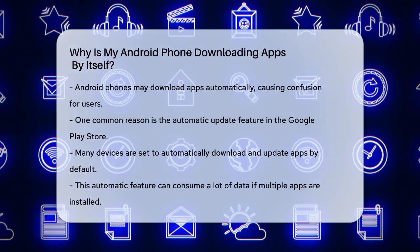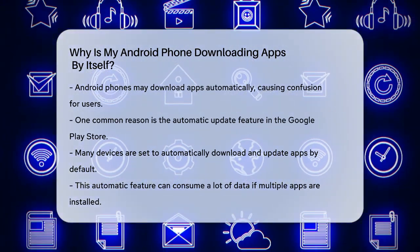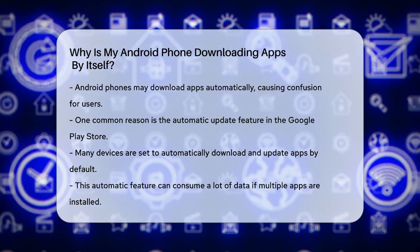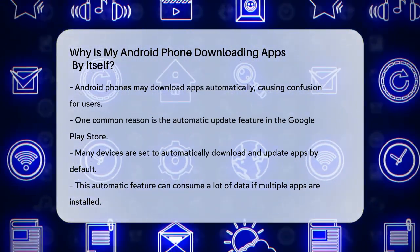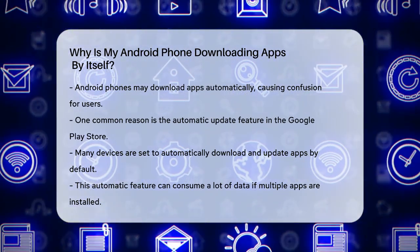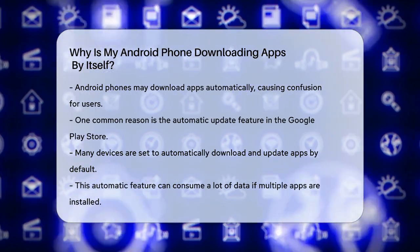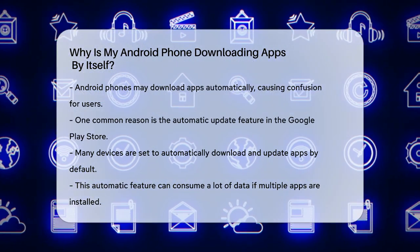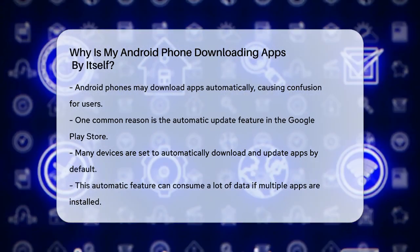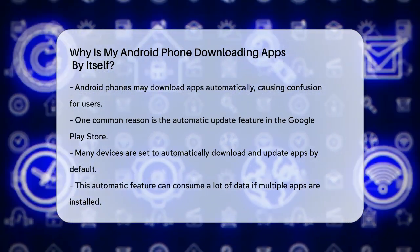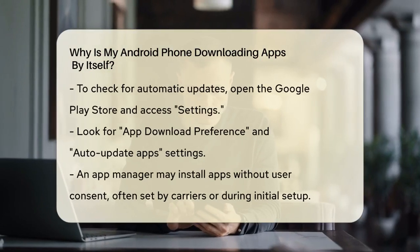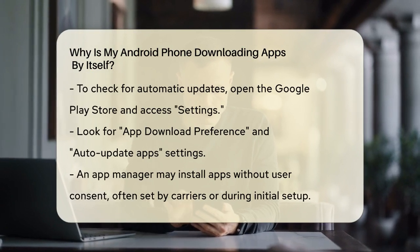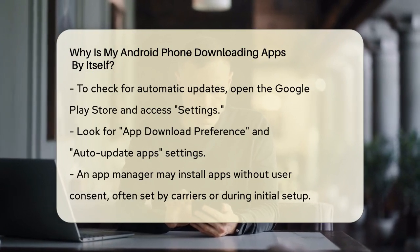One common reason is the automatic update feature in the Google Play Store. By default, many Android devices are set to automatically download and update apps without your input. This can use up a lot of your data, especially if you have many apps installed. To check if this is the issue, open your Google Play Store app, tap the three lines in the top left corner, then go to Settings. Here you'll find App Download Preference and Auto Update Apps. If these are set to automatic, it could be why you're seeing new updates and downloads without your permission.